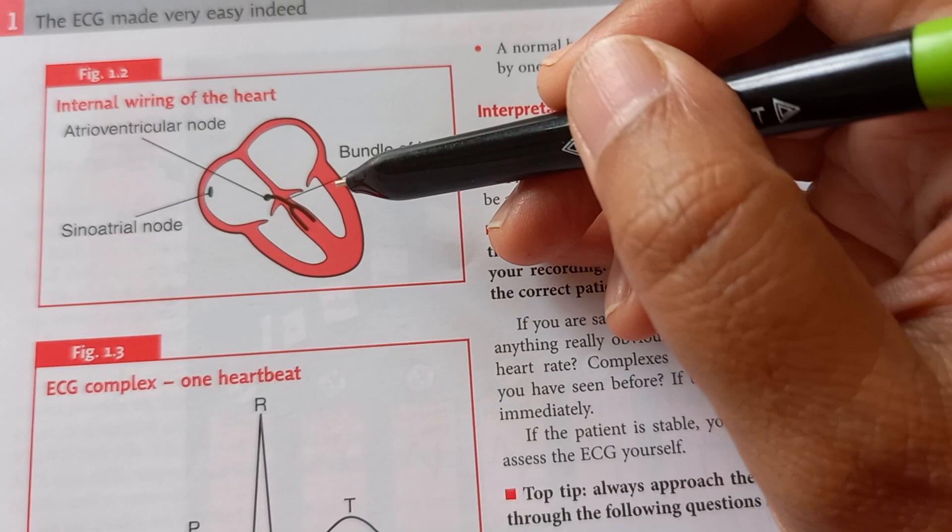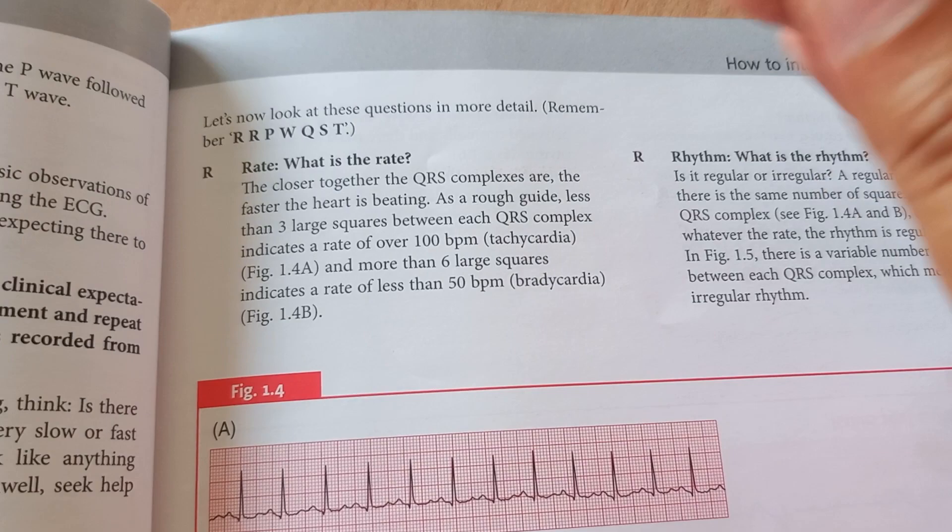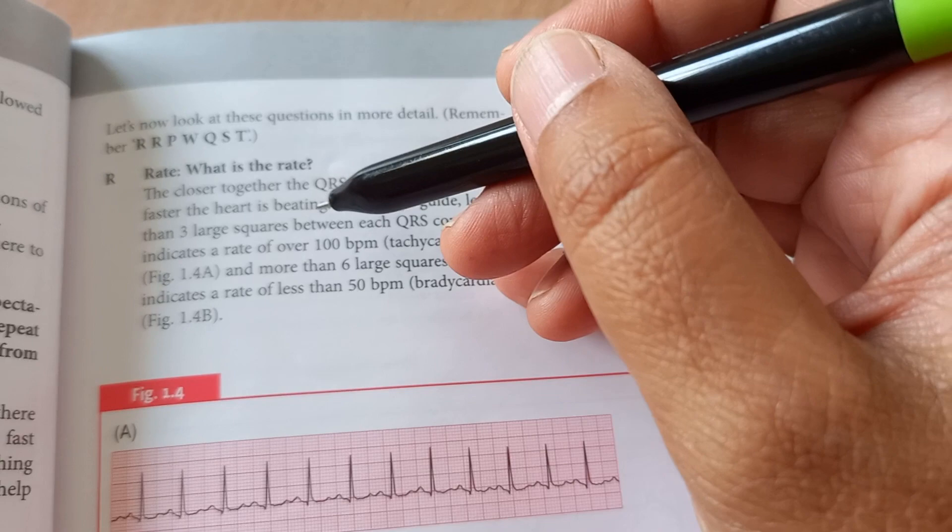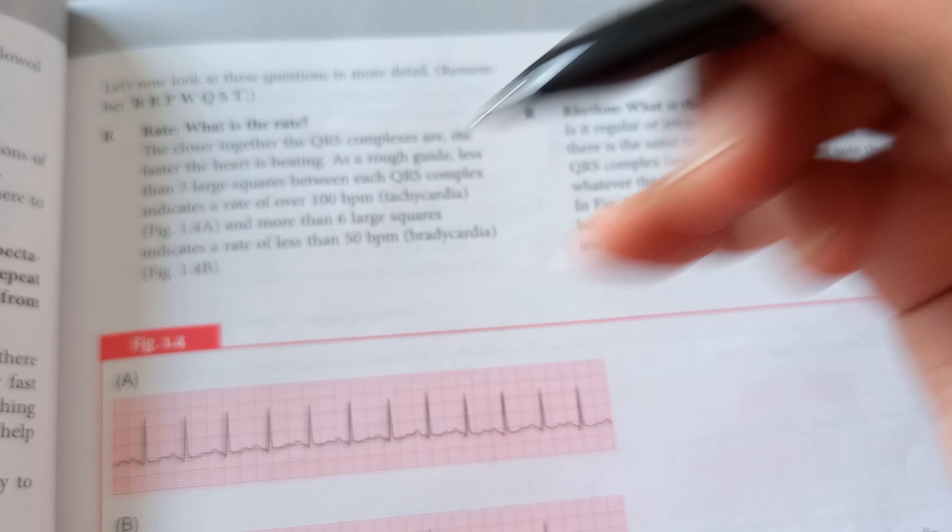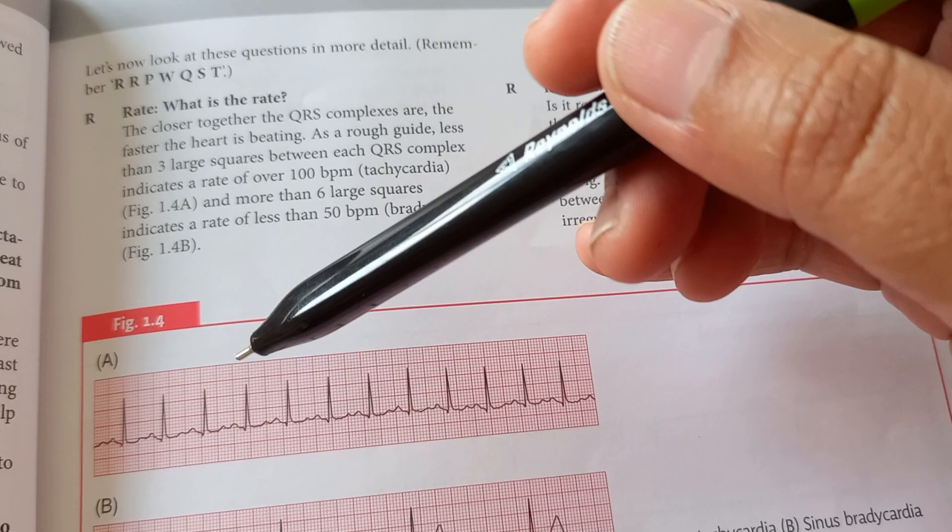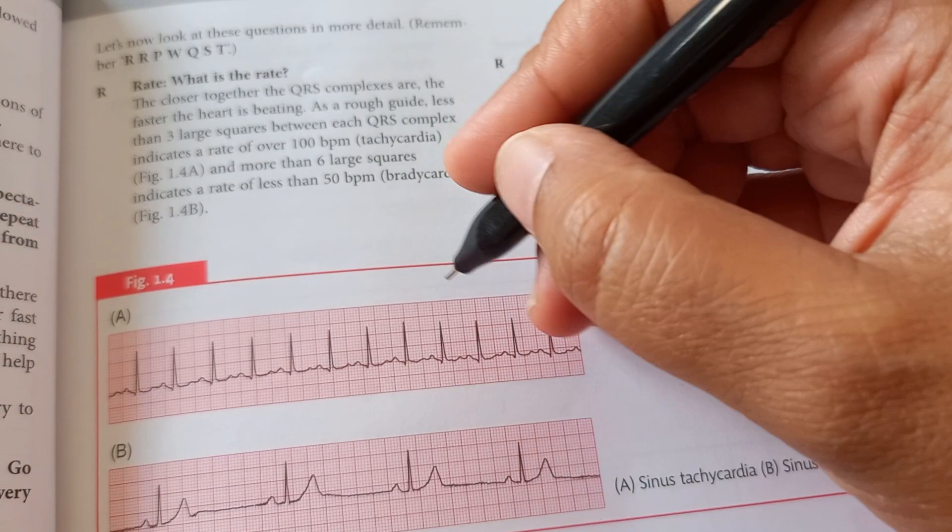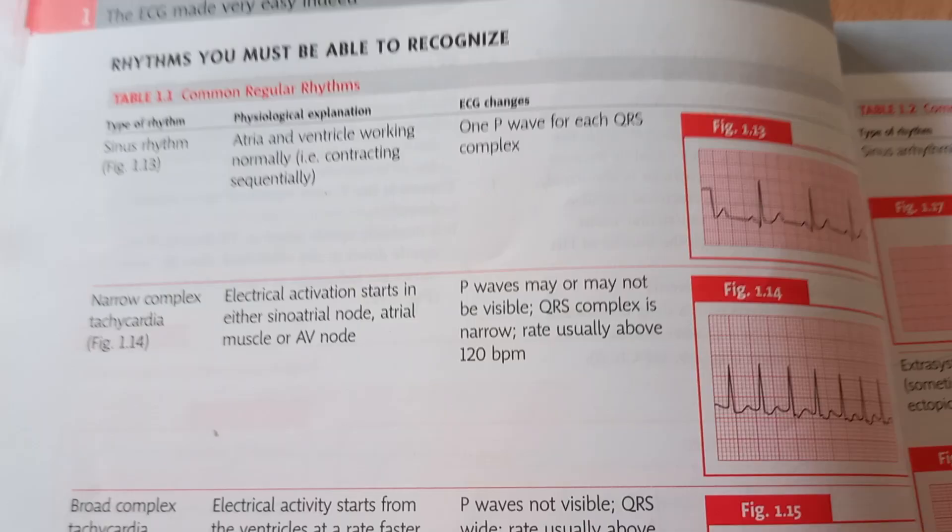You should always focus on the rate. The closer the QRS complexes, then the heart is beating fast—so tachycardia. Normally, from one QRS to the other QRS, it should be three to five squares. If it is less than that, it means that it is tachycardia. If these are wide apart, it means that it is bradycardia. You just take 300 and divide by the number of squares.